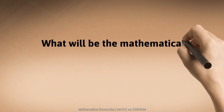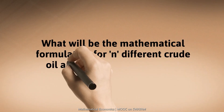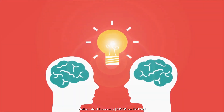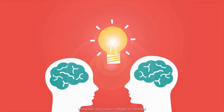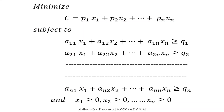What will be the mathematical formulation for N number of crude oils and N number of products? C is the cost, and X1, X2, ... XN are the N different types of crude oil. P1, P2, ... PN are the corresponding prices of crude oil, and Q1, Q2 up to QN are the N different products. Note that the inequalities are of the greater-than-or-equal-to type. The solution of the model seeks to find the optimum values of the choice variables X1, X2 up to XN that will satisfy all the constraints.